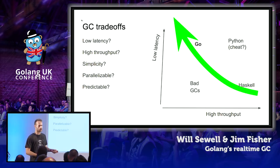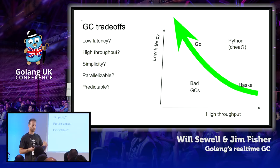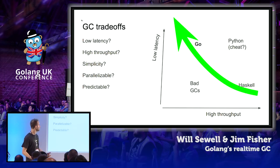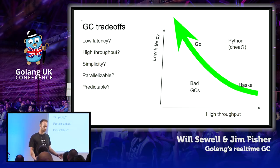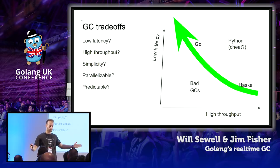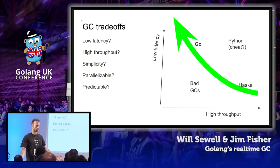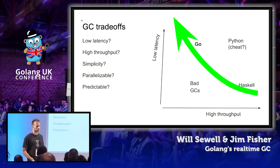There are all kinds of things that you might want from a garbage collector: you might want it to be simple, to not pause your program, to be parallelizable, to be predictable, to compact your heap into one area of memory, or to not have to traverse your entire heap. In short, you can't have them all — there are trade-offs involved.